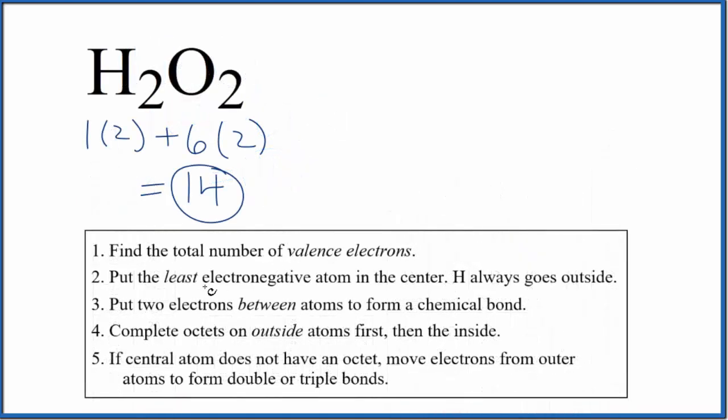When we draw Lewis structures, the least electronegative atom goes in the center. But hydrogen always goes on the outside. So let's put two oxygens with hydrogen atoms on the outside, like this.